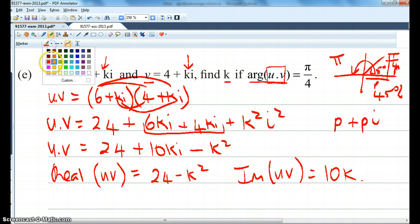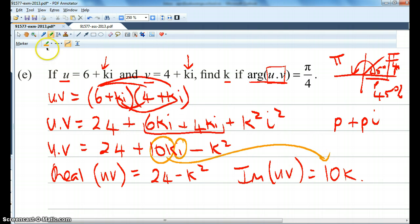So here's my bi-term. So my 10k is my imaginary and my 24 minus k squared is my real bit.